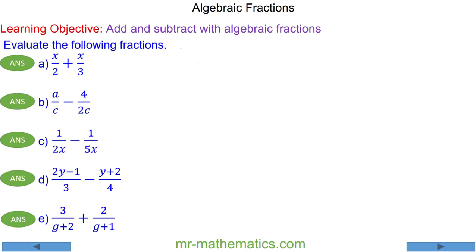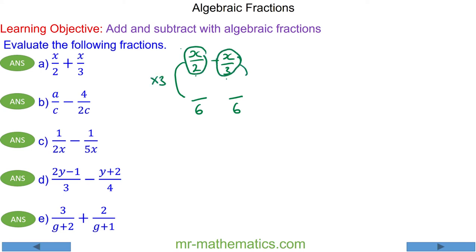In this lesson we're going to add and subtract with algebraic fractions. We begin with x over 2 plus x over 3. To add these fractions we need a common denominator — the lowest common multiple of 2 and 3 is 6. So we make the denominator 6 by multiplying x over 2 by 3, and x over 3 by 2, because 2 times 3 and 3 times 2 both make 6. So we have 3x minus 2x over 6.